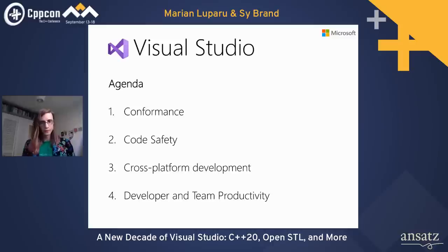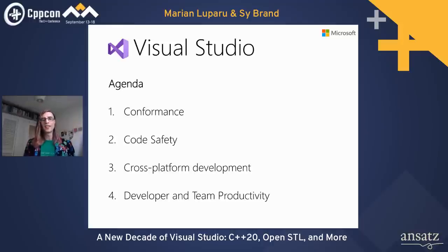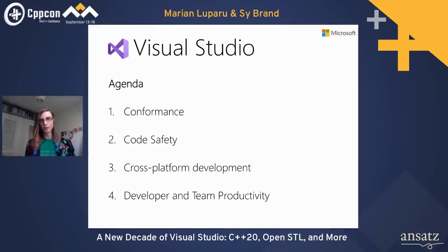We have four things on our agenda today. First is all the work we've been doing in conformance for C++ and C, covering the massive update that is C++20. Second is code safety — static analysis and tools to help make your code secure. Third is cross-platform development — Visual Studio is much more than a Windows-only IDE now. And fourth is developer and team productivity.